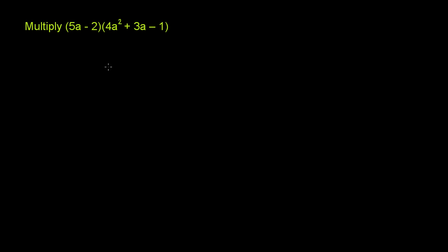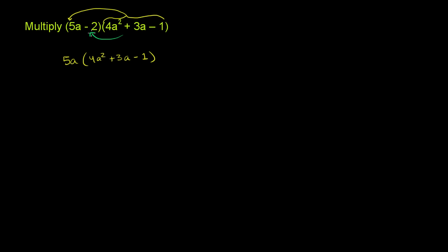Here we really have to rely on the distributive property. We can distribute this entire trinomial onto the binomial. So we multiply 4a squared plus 3a minus 1 times 5a, and then multiply 4a squared plus 3a minus 1 times negative 2. That gives us 5a times (4a squared plus 3a minus 1), plus negative 2 times (4a squared plus 3a minus 1). Each term of the binomial is now being multiplied by the entire trinomial.